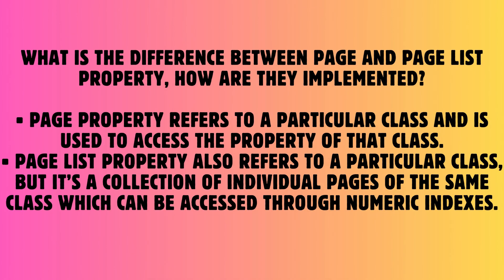Question: What is the difference between page and page list property, and how are they implemented? Answer: Page property refers to a particular class and is used to access the properties of that class. Page list property also refers to a particular class, but it is a collection of individual pages of the same class, which can be accessed through numeric indexes.